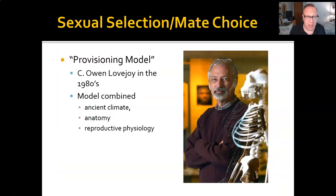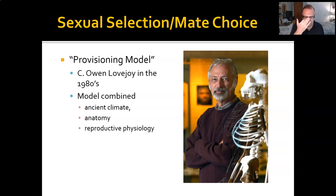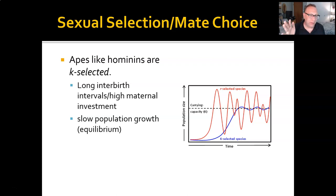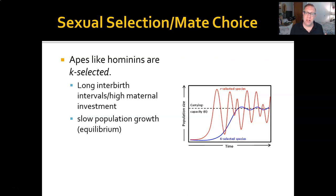The final model is the provisioning model. This holds that sexual selection and mate choice had a major impact on the evolution of bipedalism. It was developed by Lovejoy in the 1980s and combined information about the ancient climate, anatomy, and reproductive physiology. Compared to monkeys, apes — and hominins are in that group — are K-selected, meaning they have long interbirth intervals, high maternal investment in their children, and that leads to slow population growth reaching some kind of equilibrium.